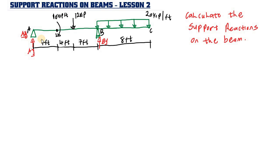These forces will make the structure be at equilibrium. Because we don't have any horizontal force on this beam, Ax is automatically going to be equal to zero. So all we need to do is calculate Ay and By.